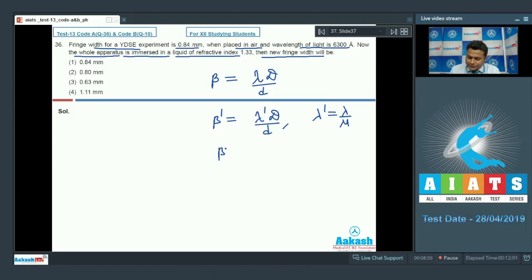So beta dash we can write as lambda by mu capital D upon d. Taking the ratio of 1 and 2, we get beta dash upon beta equals 1 by mu. And therefore beta dash will be beta divided by mu, where beta is given.